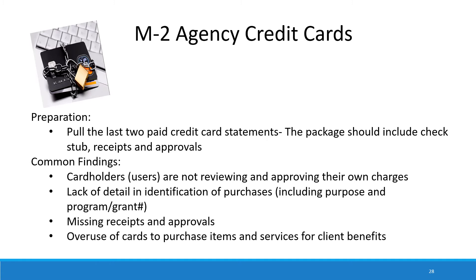A specific example I'd like to provide is with Walmart. Some receipts we've reviewed only contain a SKU number and don't contain a description of the actual item purchased. In these instances, it's the purchaser or cardholder's responsibility to detail what they purchased — whether it be a box of hanging files or apple juice for a food pantry. We would like to see those details if grant funds were used.